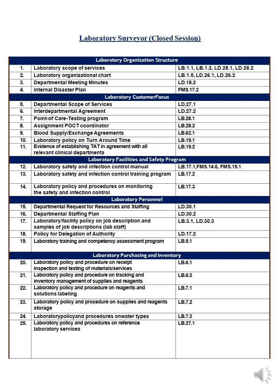The fifth area is laboratory purchasing and inventory. Number twenty is the laboratory policy and procedure on receiving, inspecting, and testing materials and services — show me the policy for how to inspect machines, services, and materials, and how to purchase them. Number twenty-one is the policy and procedure for tracking and inventory management of supplies and reagents — tell me how you track a machine, supply, or reagent coming to your lab: when it arrived, where it was used, in which department or division, whether any remains, and how to dispose of it.